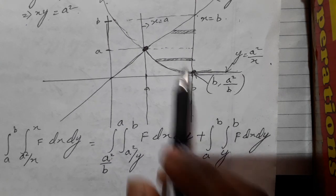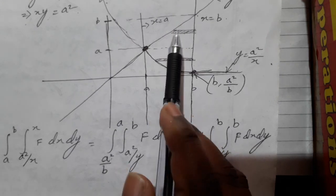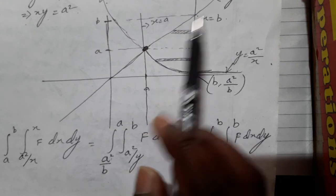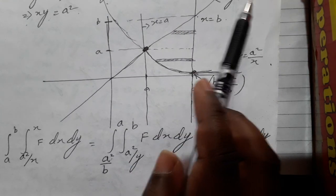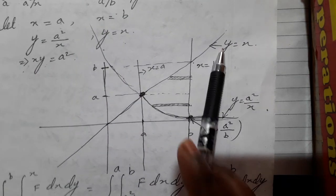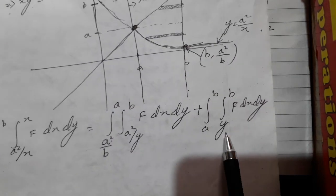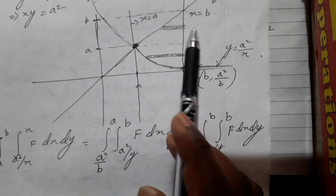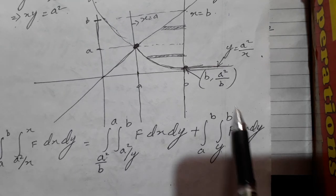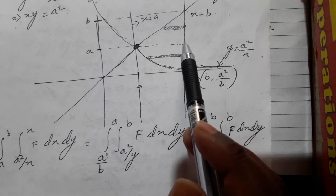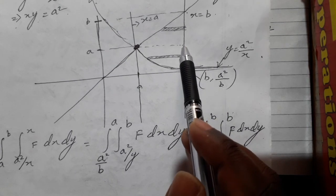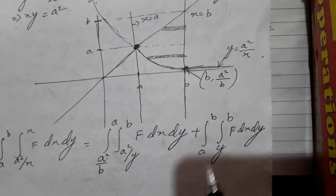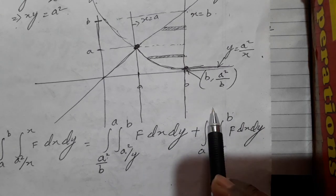Plus, if I take this strip, this strip is touching this line. The value of x here is y. So we'll have y, and this strip also touches this, so x will be b. So x ranges from y to b, and the limit for y is ranging from a to b.